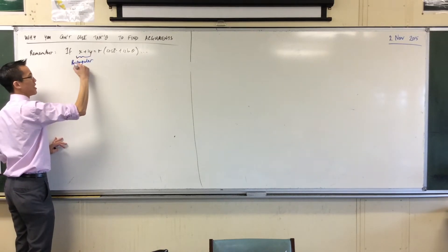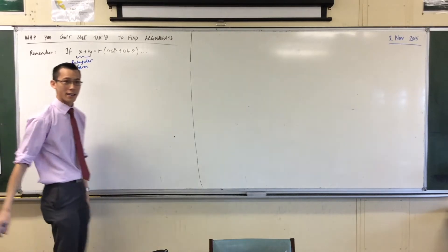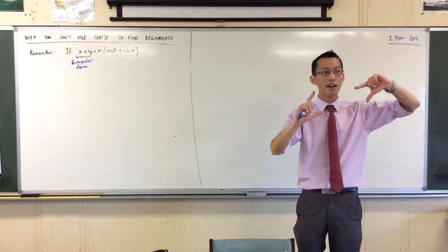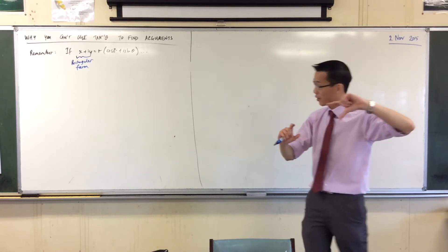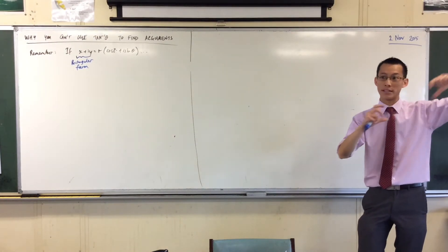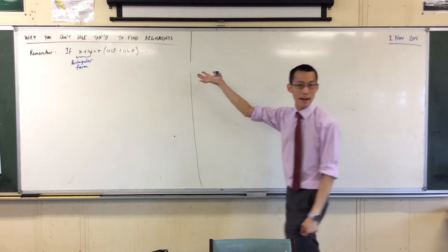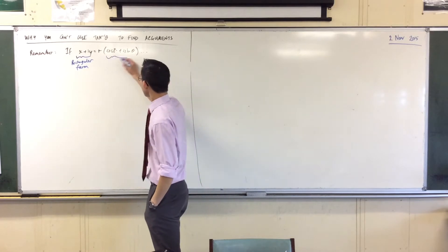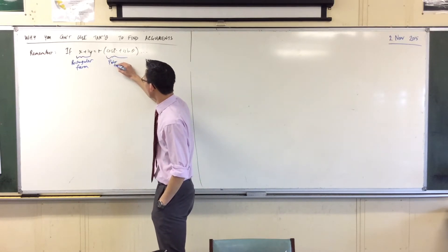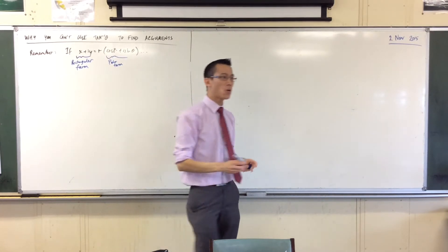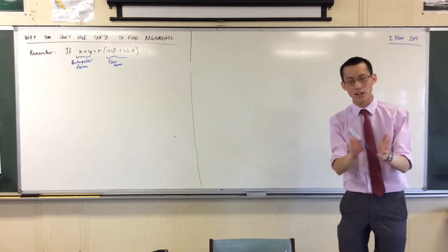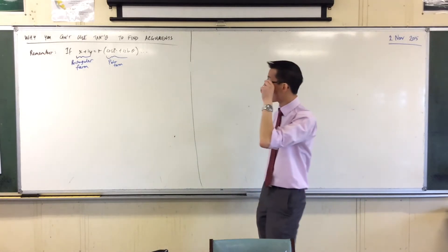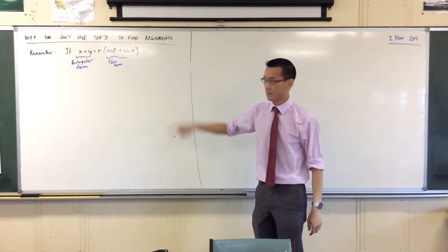It doesn't take too much imagination to see why it's called rectangular form. When you've got x plus iy, the shape that you're tracing out is a rectangle — just like when you're adding complex numbers, the shape you trace out is a parallelogram. The mod-arg form is also called polar form, because when you think of coordinates in terms of their distance and an angle, they're called polar coordinates. You still need two numbers, but that's another way of talking about it.